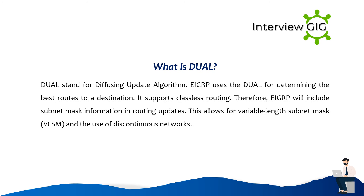What is DUAL? DUAL stands for Diffusing Update Algorithm. EIGRP uses DUAL for determining the best routes to a destination. It supports classless routing; therefore, EIGRP will include subnet mask information in routing updates. This allows for variable length subnet masking and the use of discontiguous networks.